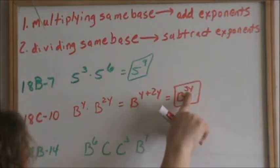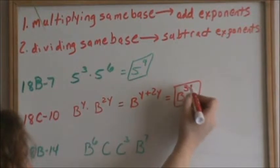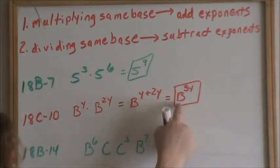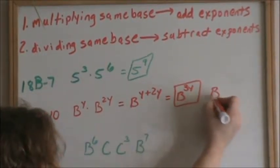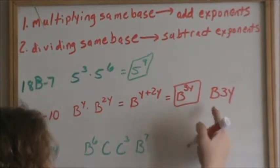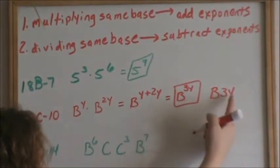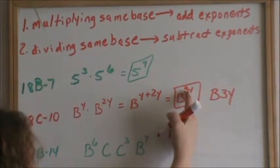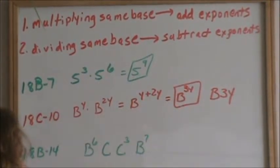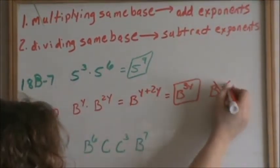That's a 3y. Make sure your exponents look small and are up higher than your base, so it does not look like b, 3y. That implies b times 3 times y. This is b to the 3y. So make sure your exponents look like exponents. That's no good.